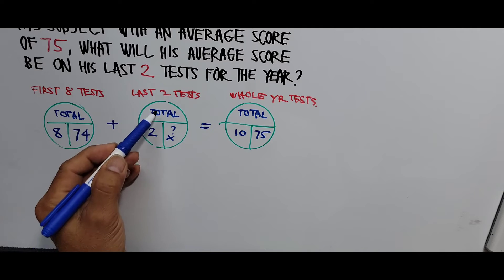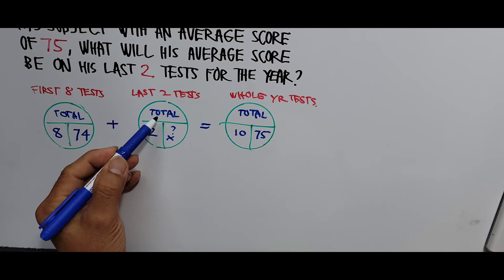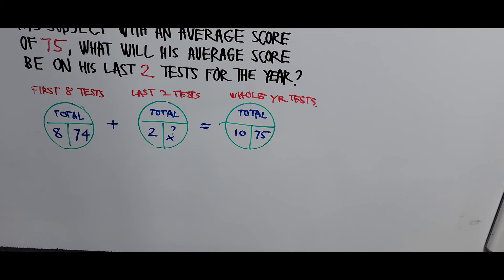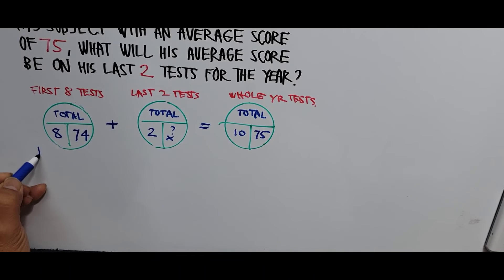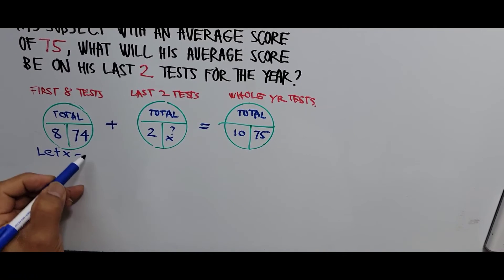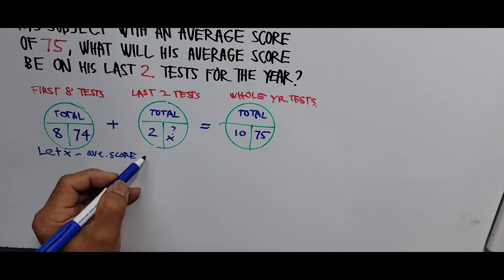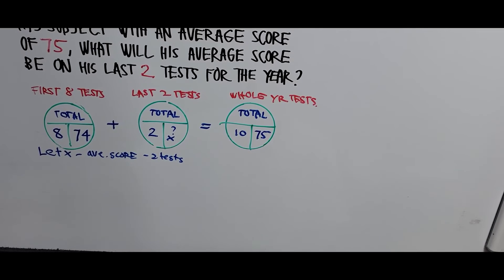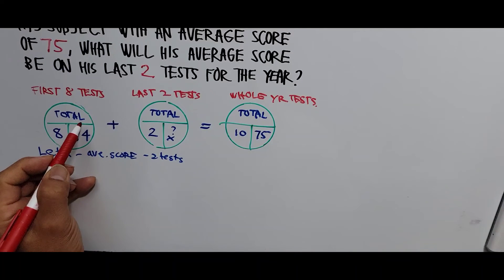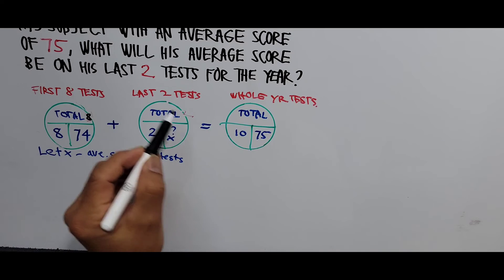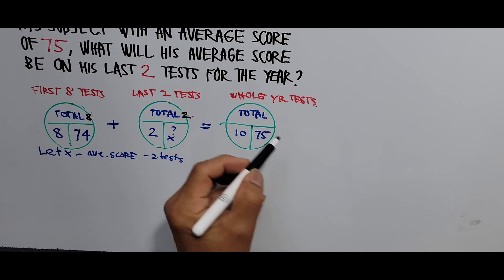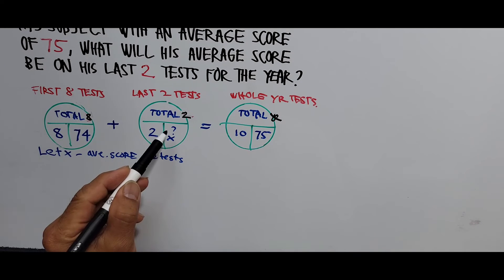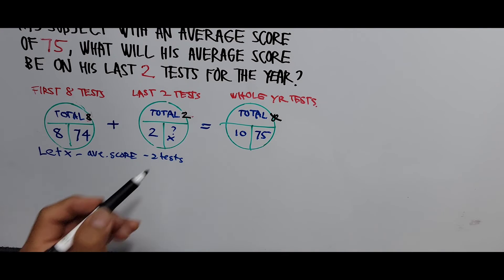Since we have two values already known, we can find x. Let x be the average score for the last two tests. Let's label these totals: 'Total for 8' for the first eight tests, 'Total for 2' for the last two tests, and 'Total for yr' for the whole year. Total for 2 equals Total for yr minus Total for 8.